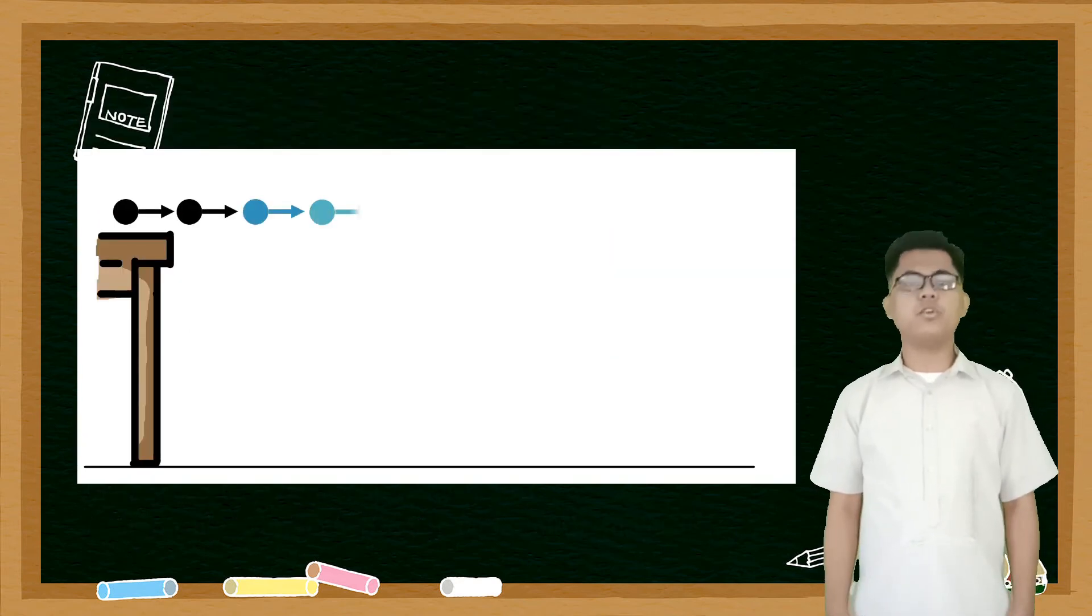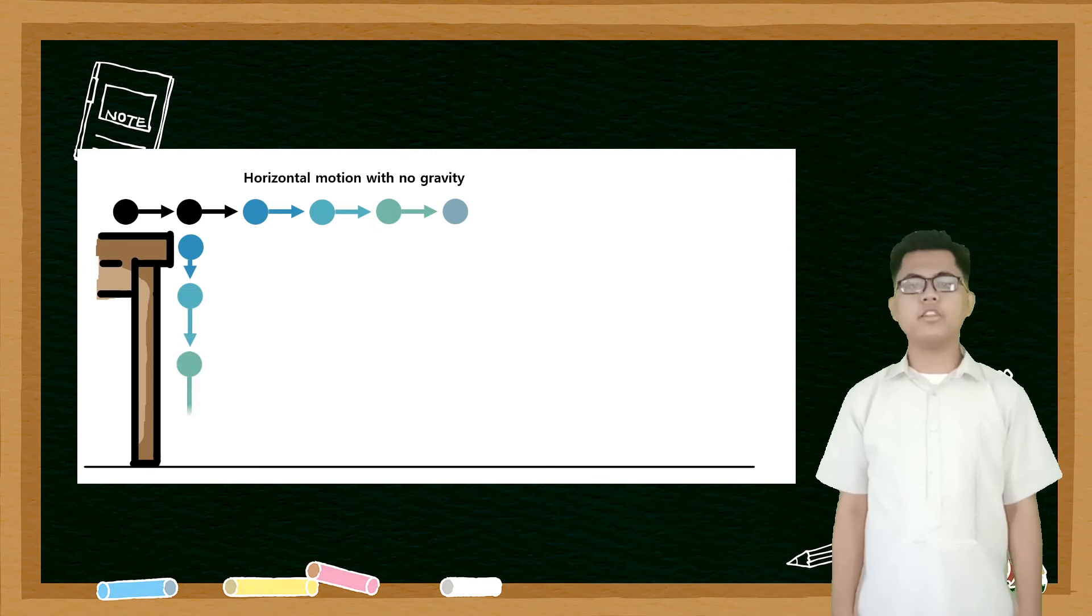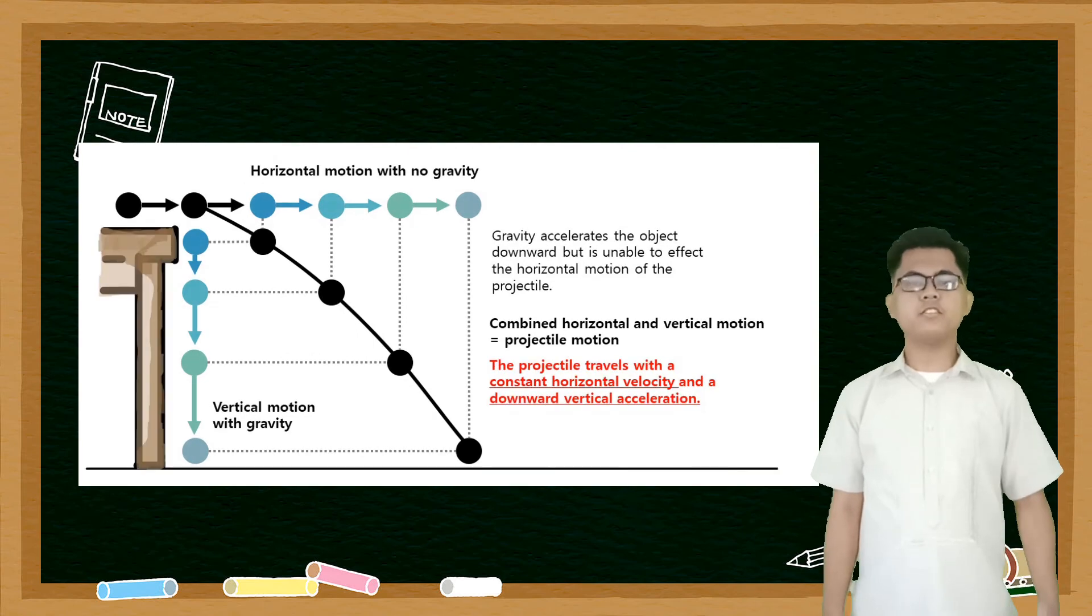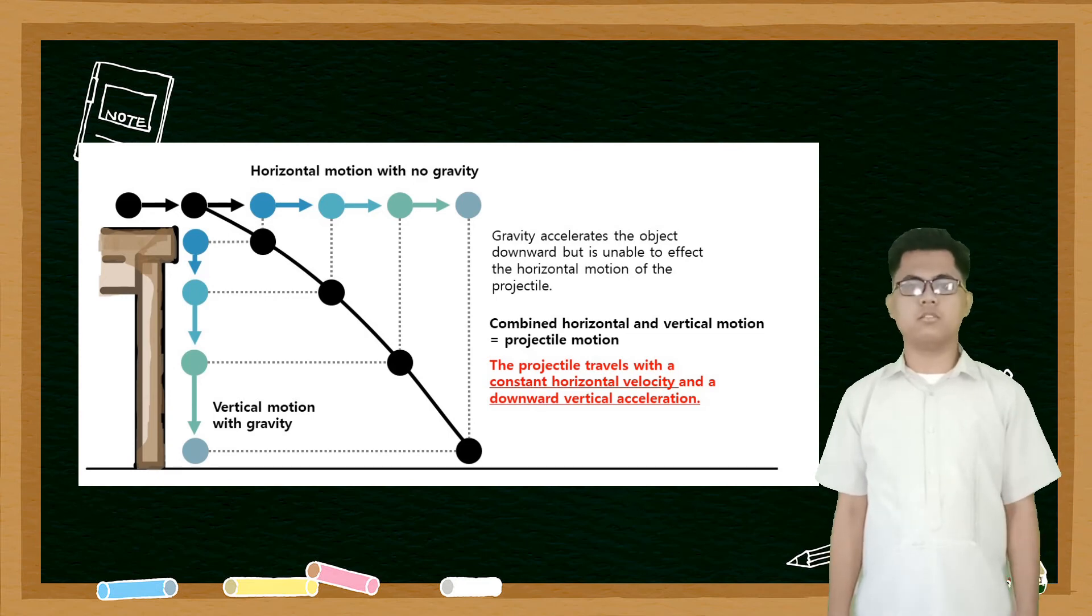Combining now the horizontal motion and the vertical motion will give us the projectile motion. You will see that the object travels with a constant horizontal motion while accelerating vertically downward due to gravity.